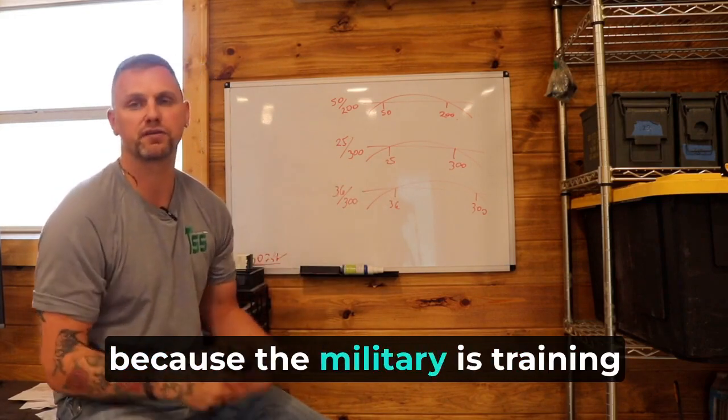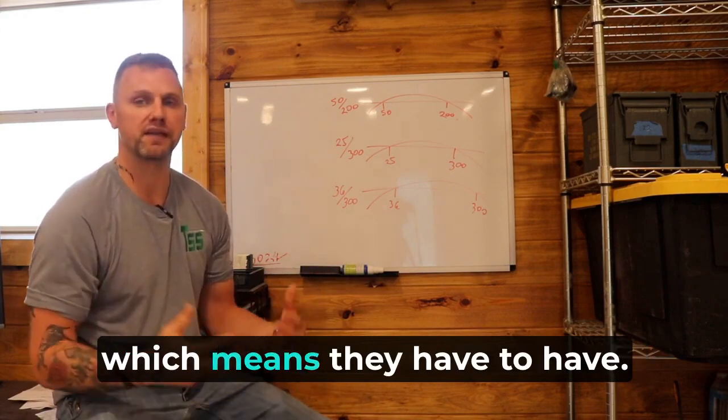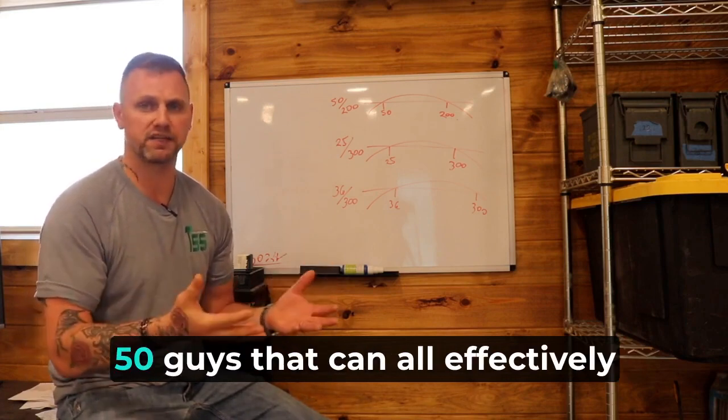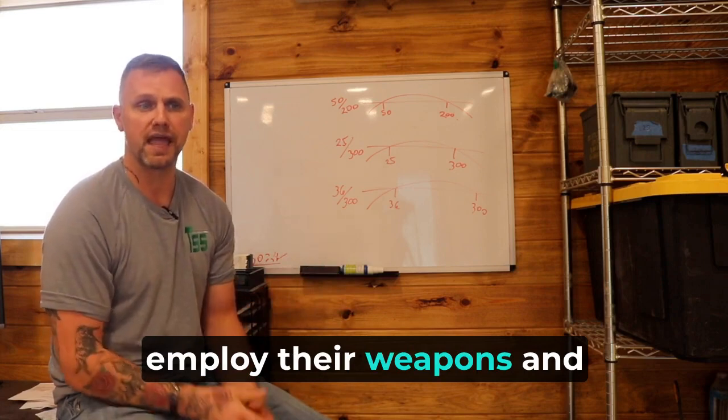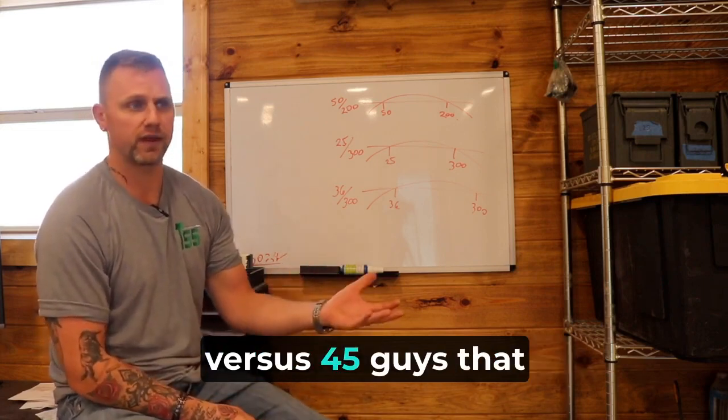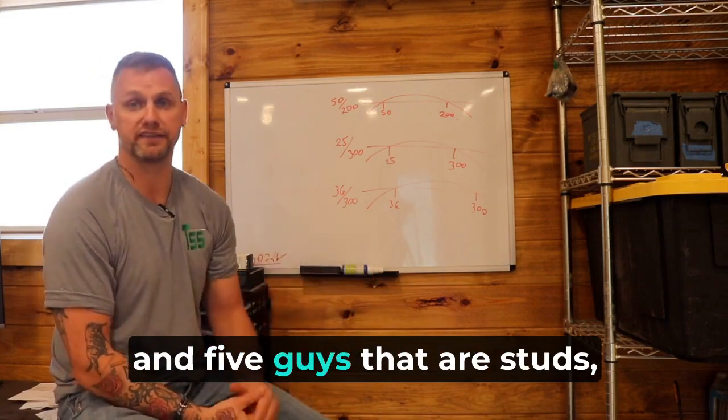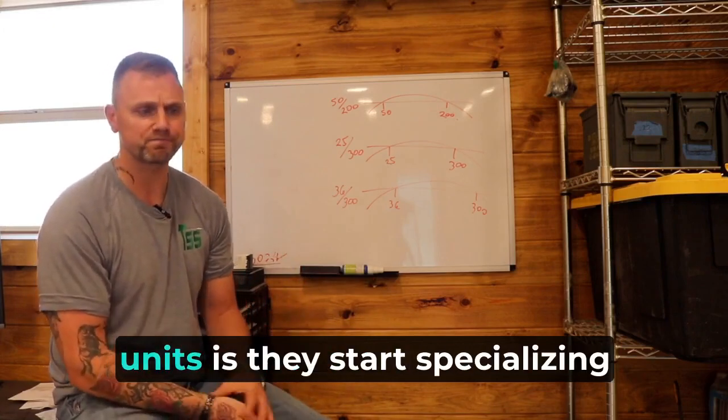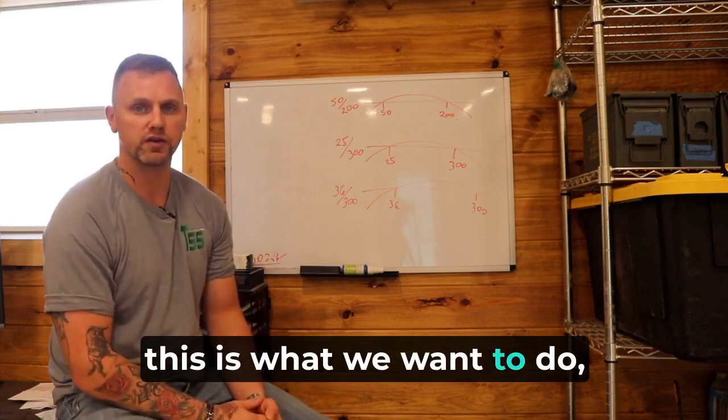That's how the military trains because the military is training a large force and they train to the lowest common denominator, which means the military is much better prepared if they have a group of 50 guys that can all effectively employ their weapons and take down the bad guys versus 45 guys that can't ever get it and they can't figure out how to shoot a firearm and five guys that are studs.